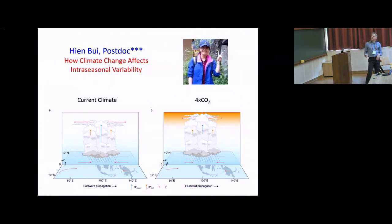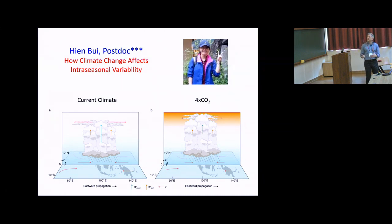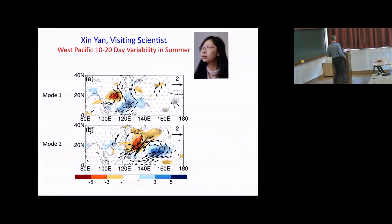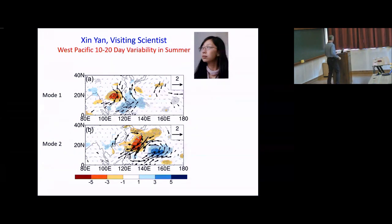Hien is a postdoc studying how climate change in a suite of five CMIP5 climate models affects the strength of the MJO. There are very interesting things that happen to the MJO in future climate — precipitation variance goes up but wind variability goes down — and these also have implications for the future climate of the BSISO. I also have a postdoc, Jin, who is studying 10-to-20 day variability in boreal summer in the northwest Pacific, which follows nicely from some of the discussion we had yesterday.